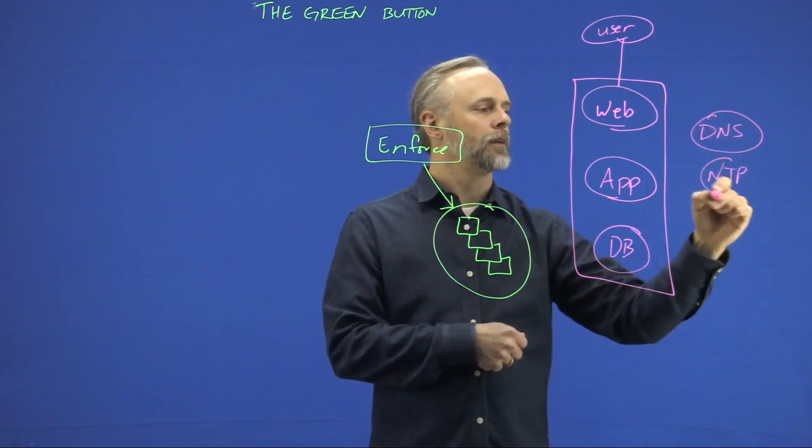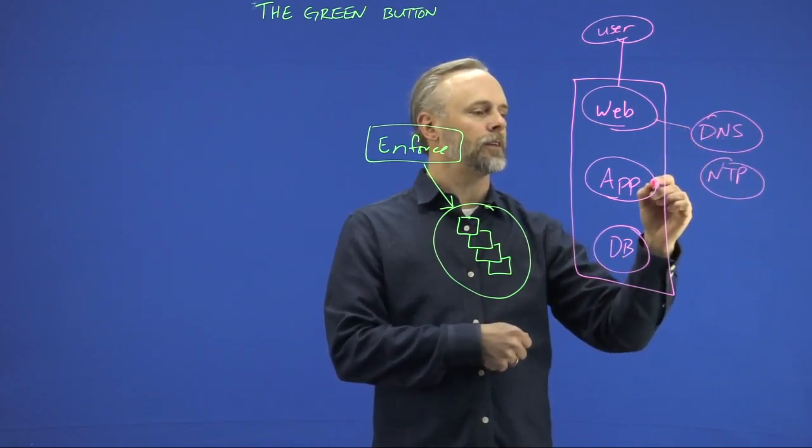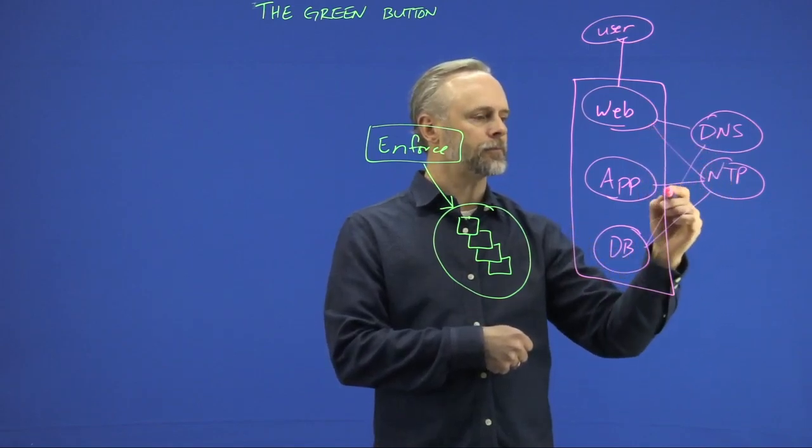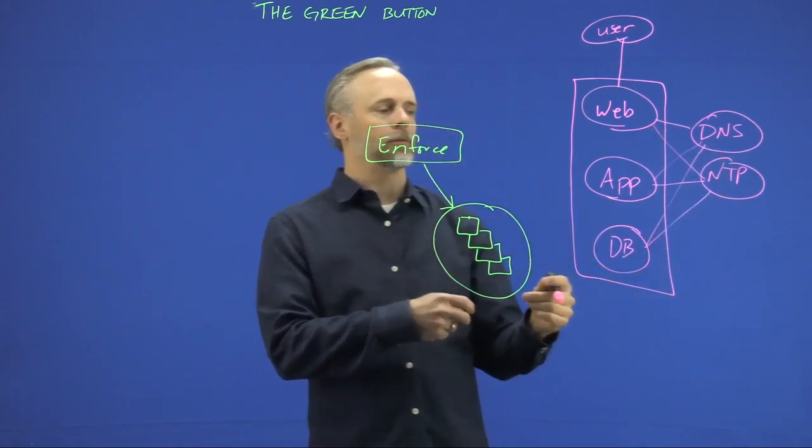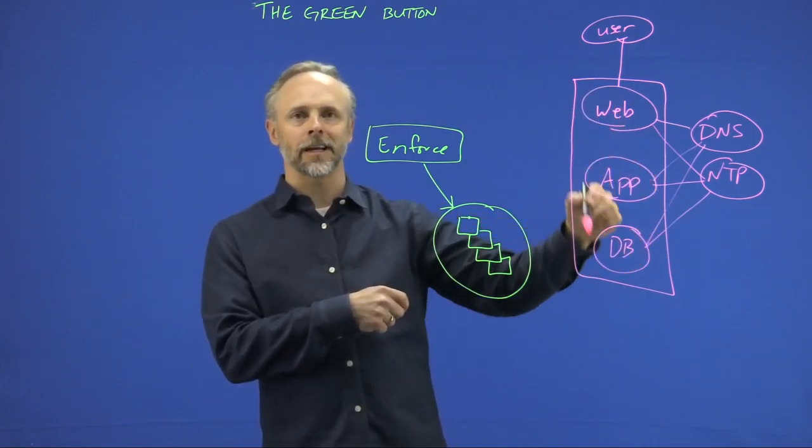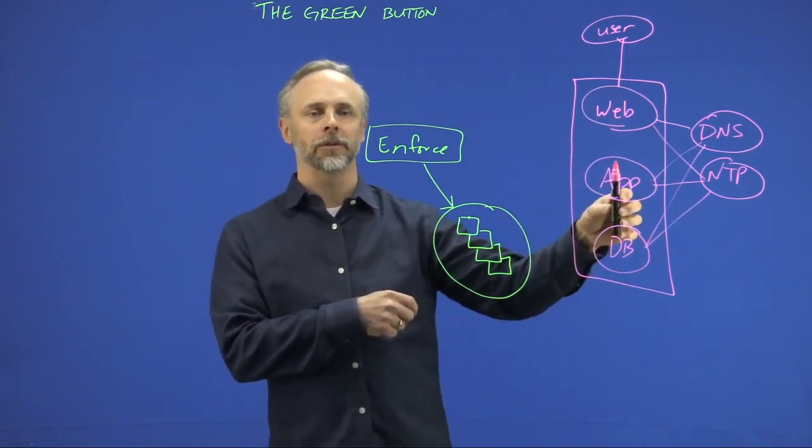Now that doesn't mean we're not looking anywhere else. We might actually see things like where we have a connection to our users in this environment, or if we've got DNS or NTP or some other type of shared service. Essentially we're going to see that we've got connections to all of these different things.